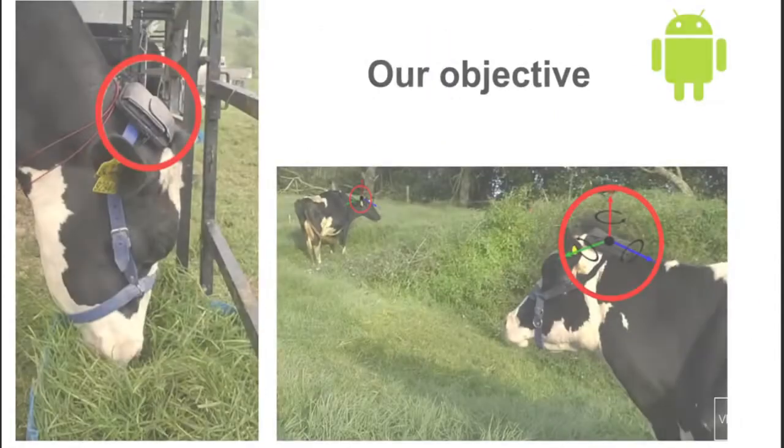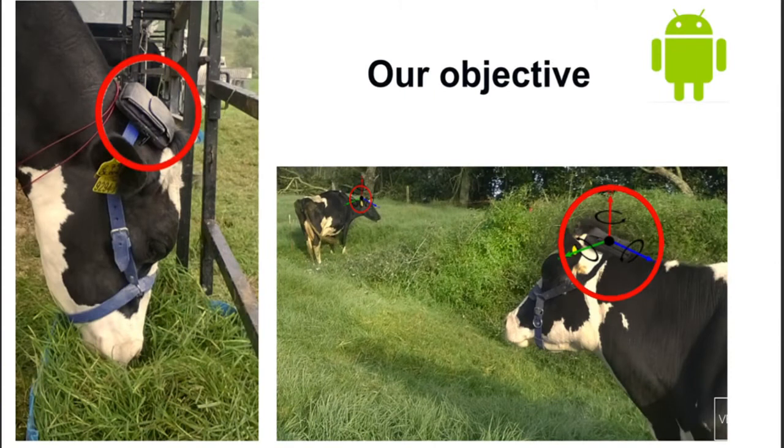The objective of this work was to develop a tool for cattle activity recognition which can be easily used by researchers or farmers to record the cattle behavior in short periods of time, for example, during 24 hours.